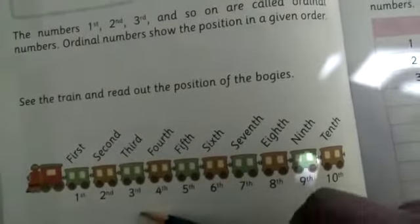See the train and read out the position of the bogies. So, here is a train. Look at the train. And read out the position.